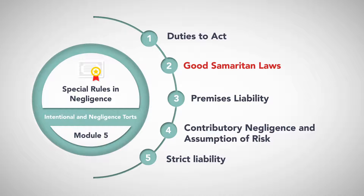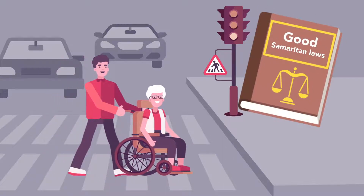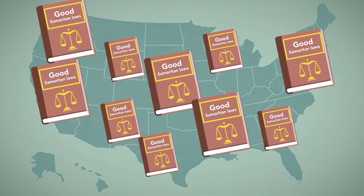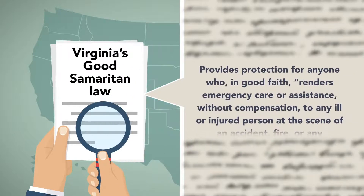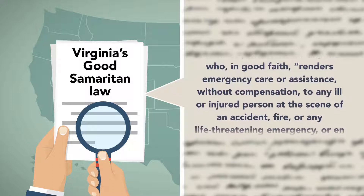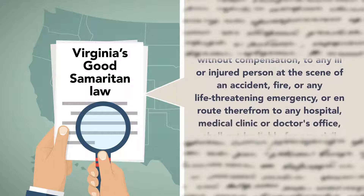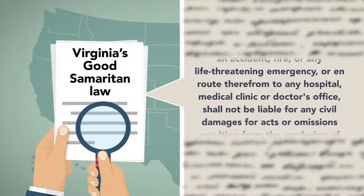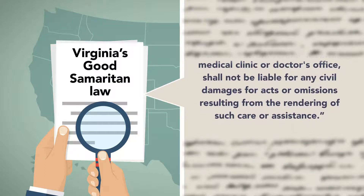Good Samaritan Laws. When people decide to aid a person in need, Good Samaritan Laws may shield them from liability if their help is ineffective or even harmful. These laws vary from state to state, with some states providing greater protections than others. Virginia's Good Samaritan Law provides protection for anyone who, in good faith, renders emergency care or assistance, without compensation, to any ill or injured person at the scene of an accident, fire, or any life-threatening emergency, or en route therefrom to any hospital, medical clinic, or doctor's office, and shall not be liable for any civil damages for acts or omissions resulting from the rendering of such care or assistance.